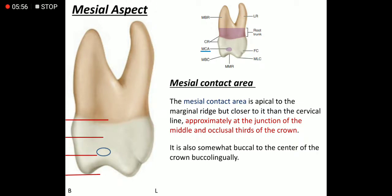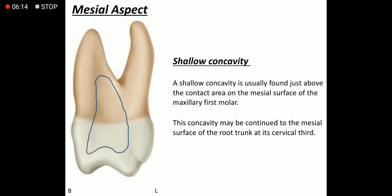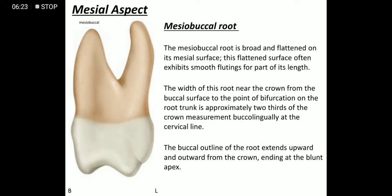If we divide the crown into three parts, the mesial contact area lies at the junction of the occlusal third and the middle third. If we divide the crown into two parts in the buccolingual direction, this area is buccal to the center. A shallow concavity can be seen which extends into the mesobuccal root until the bifurcation area. The mesobuccal root is broad and flat, with a smooth fluting. If we divide the tooth at the bifurcation into three parts, two parts are occupied by the mesobuccal root and one by the lingual root.